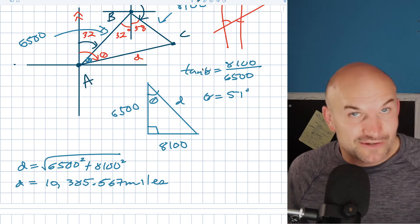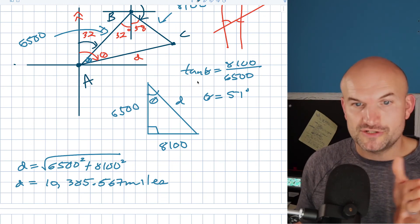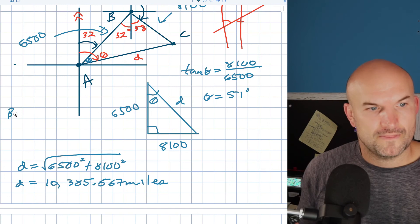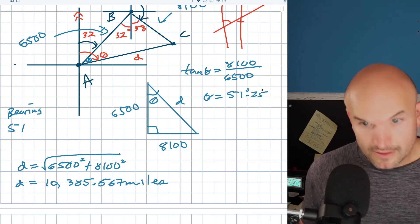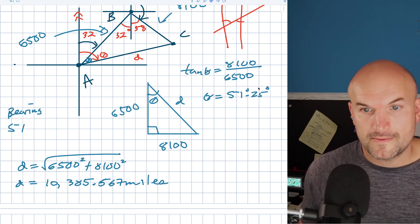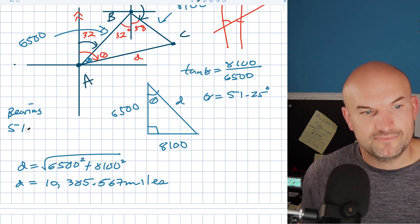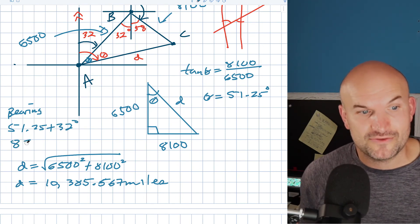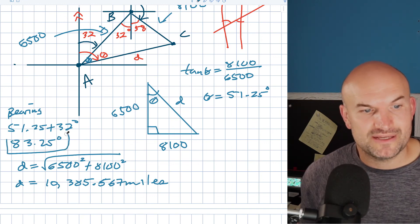Now again though guys, that's not my bearing. My bearing is going to be theta plus 32 degrees. So the bearing is going to be 51.25 degrees. So my bearing now is going to be 51.25 degrees plus 32 degrees, which is going to give me 83.25 degrees. That is going to be my bearing.